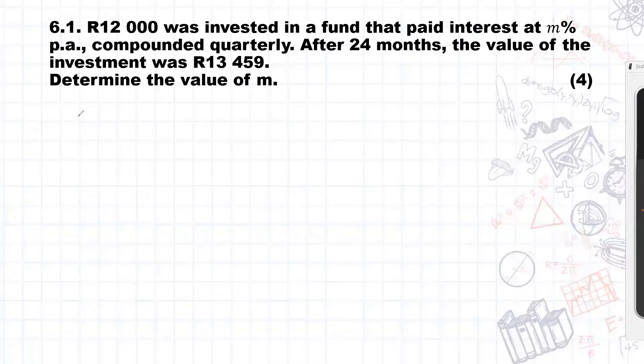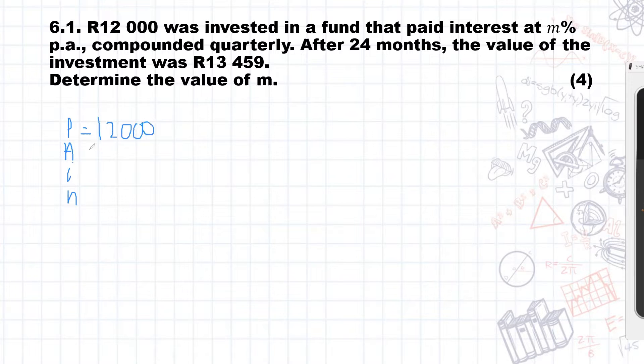So the first thing that we do is we write down our PAIN. And PAIN is just all of the letters that are in our compound and simple interest formula. So P is our initial investment, and that is R12,000. Our final amount, which is A, is R13,459. Our I is M, and it's compounded quarterly, meaning it's divided by four. Our N is 24 months, so 24 months is actually two years, and it's compounded quarterly, so we multiply that by four.